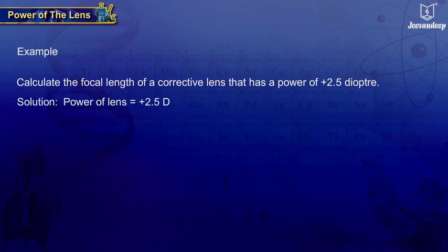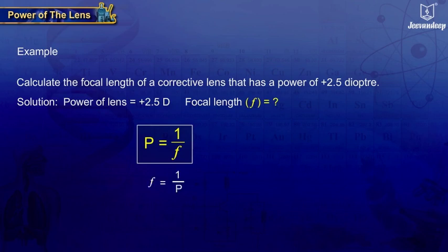Power of lens equals plus 2.5 diopter. To calculate the focal length, we use the formula: P equals 1 upon F, or focal length.